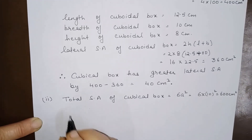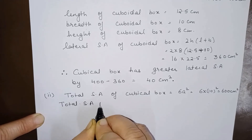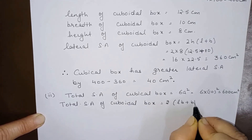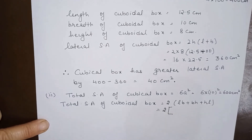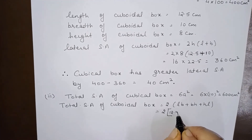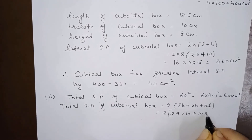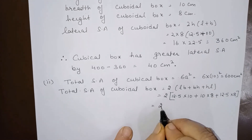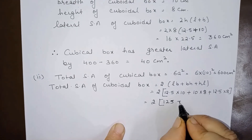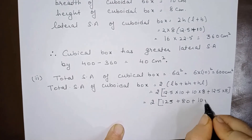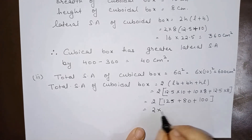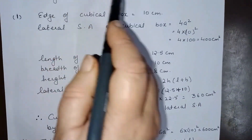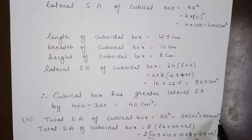Now the total surface area of the cuboidal box is given by 2(lb + bh + lh). So this is 2 times: lb = 12.5 into 10, bh = 10 into 8, and lh = 12.5 multiplied by 8. That gives 2 into (125 + 80 + 100), which is 2 multiplied by 305, so this is 610 centimeter square.